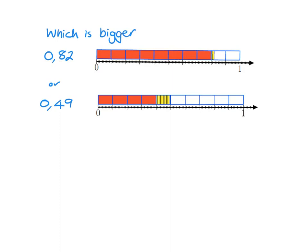This has got 8 tenths, so it's got 8 of the red pieces. This has got 4 tenths, it's got 4 of the tenths pieces, and because 8 is bigger than 4, 0.82 is going to be bigger than 0.49. These little yellow pieces, even though there are 9 of them, they don't even make up one whole red piece yet. So, they're not actually going to make a difference to which of these two is bigger.